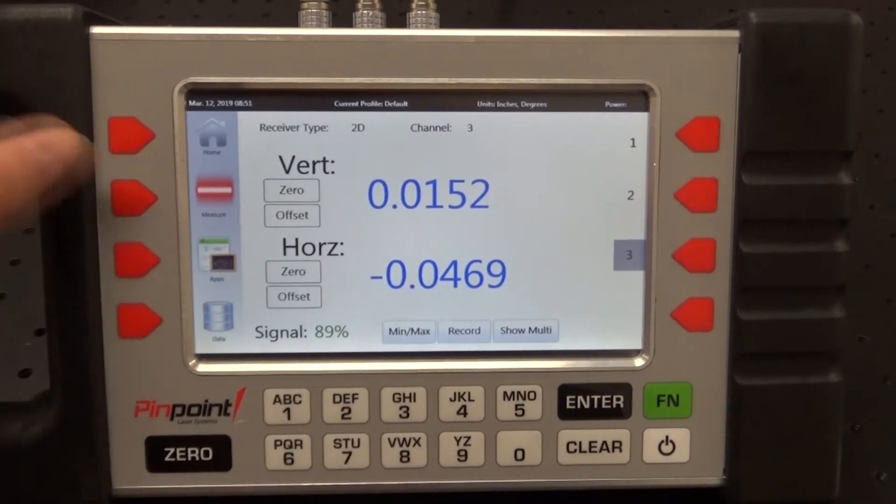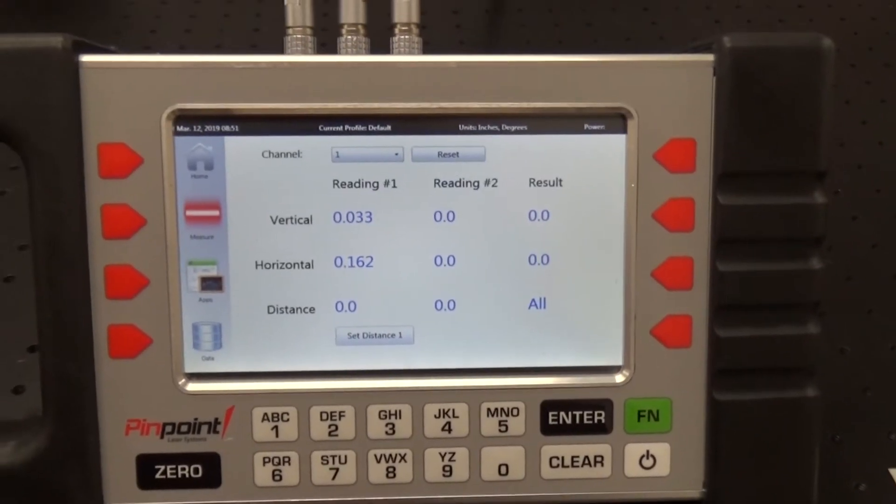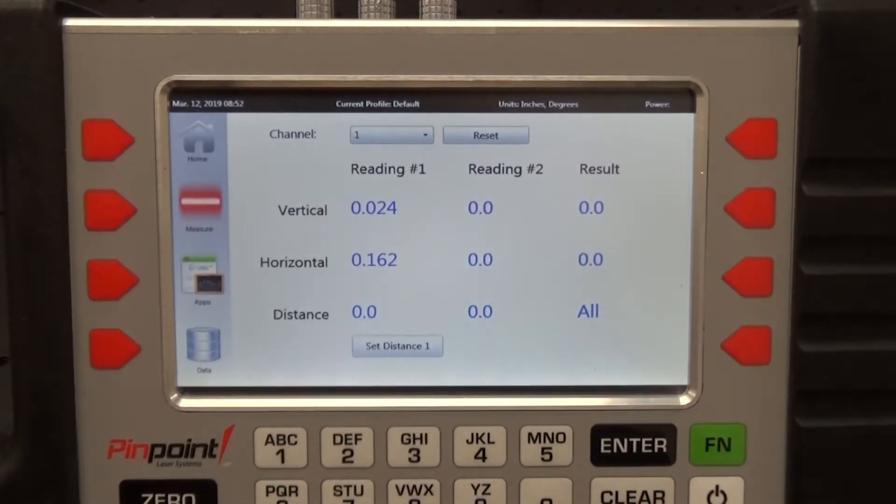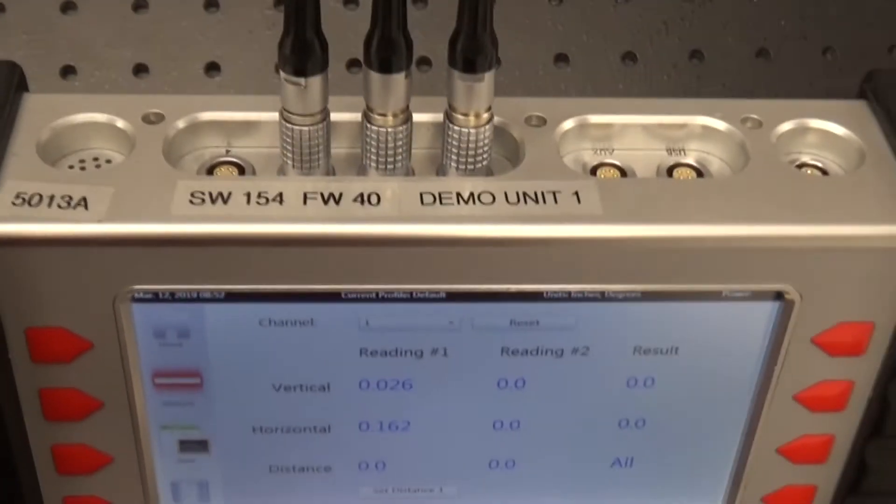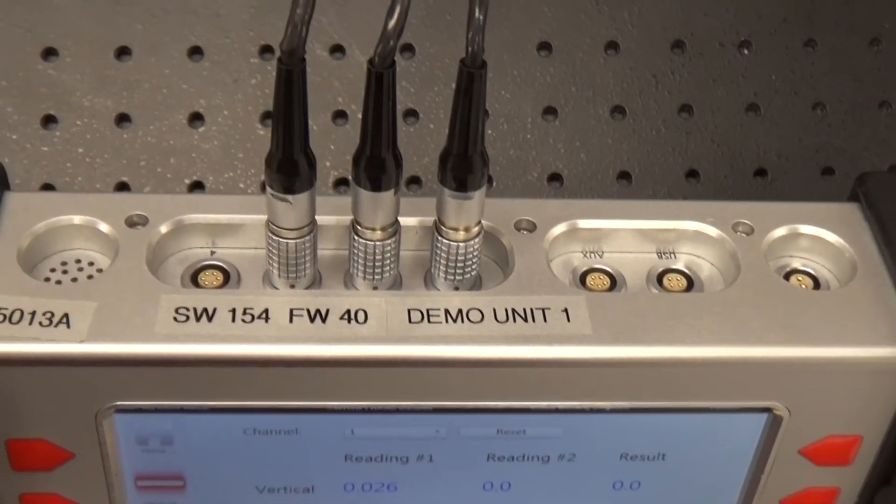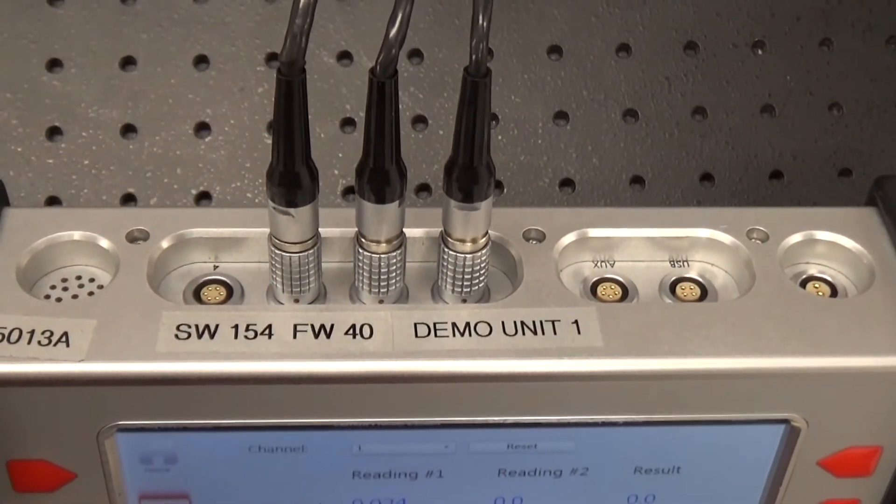The Pro display features on-board applications such as the Buckingham program which can be used to set the laser parallel through two reference points for straightness applications. The Pro display can connect to four wired receivers and four wireless. It has a USB and an auxiliary output for connecting to computers or control systems.